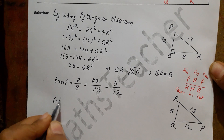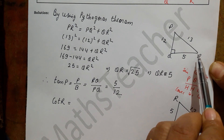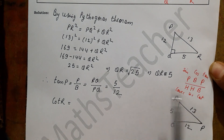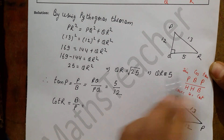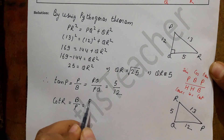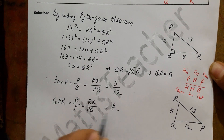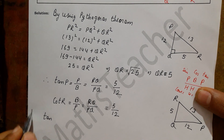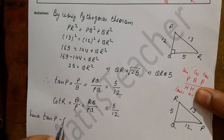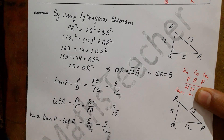Now we find cot R. Looking from angle R, cot R equals base upon perpendicular. The base from R is QR and the perpendicular is PQ. So cot R equals QR upon PQ, which is 5 upon 12. Therefore, tan P minus cot R equals 5 by 12 minus 5 by 12, which cancels to give the answer 0.